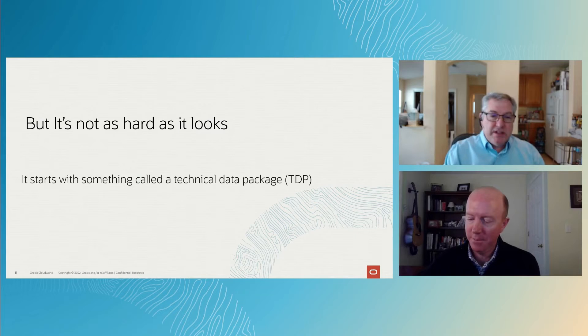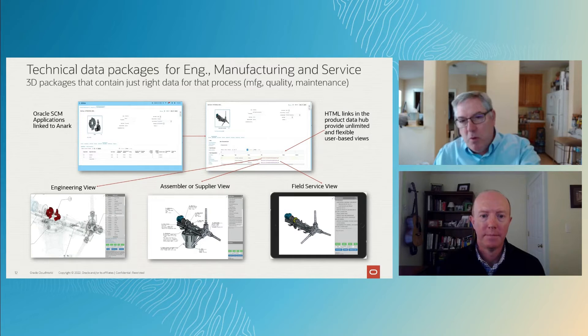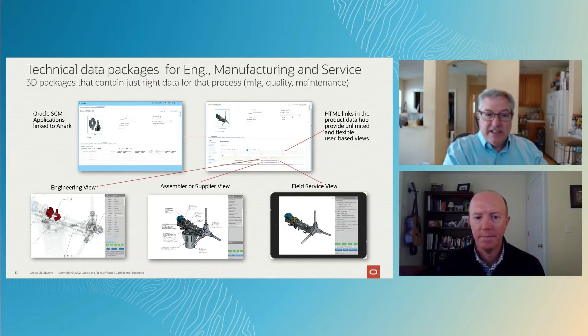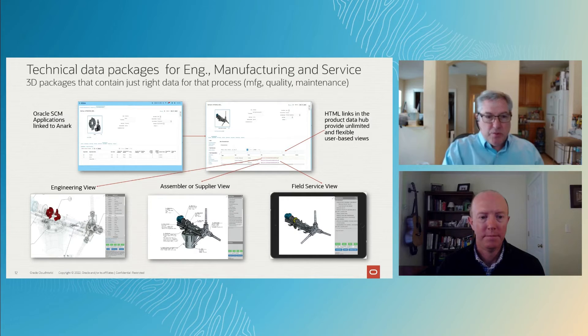A technical data package is a role-specific package. There can be an engineering package, a manufacturing package, a field service package, a quality package, a procurement package. In that package is exactly what you need to do that function, and nothing else. In my PLM system I have all this information — procurement, manufacturing, service — a lot of information in one place under all the right change control and configuration management capabilities. What we can do in these technical data packages is pull out just what I need for manufacturing, or quality, or procurement, or service, in a 3D-enabled package that's very role-specific.